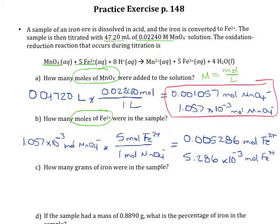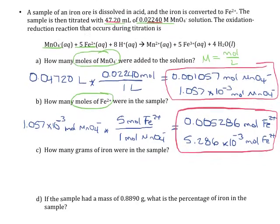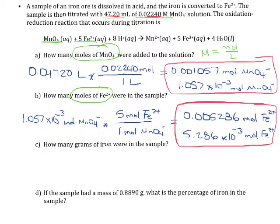You should notice that I'm using 4 significant figures for each of these answers, and I'm using 4 significant figures because that's how many I have in both of the original pieces of information. So far I've done calculations with molarity and stoichiometrically using mole ratios. The next thing they're asking me is how many grams are in the sample. Conversions between grams and moles should be pretty easy at this point.